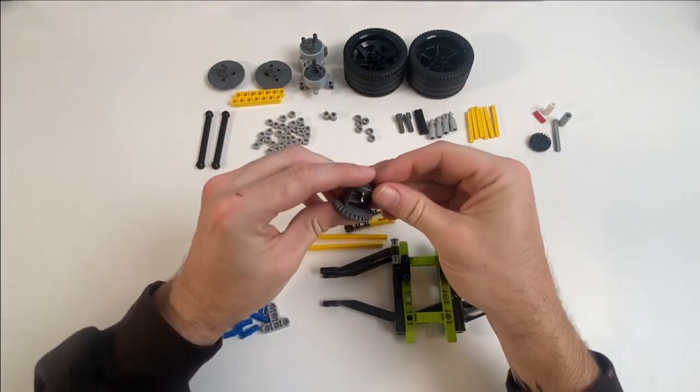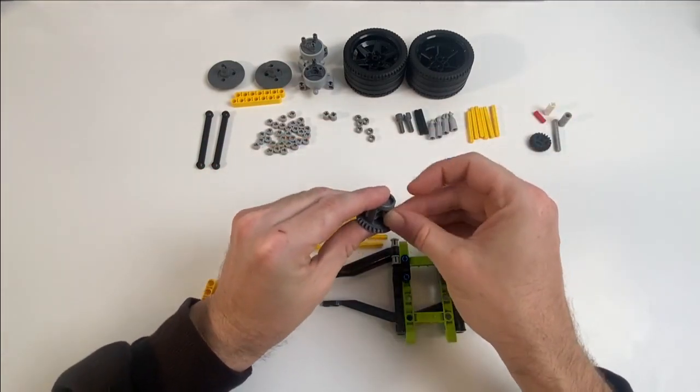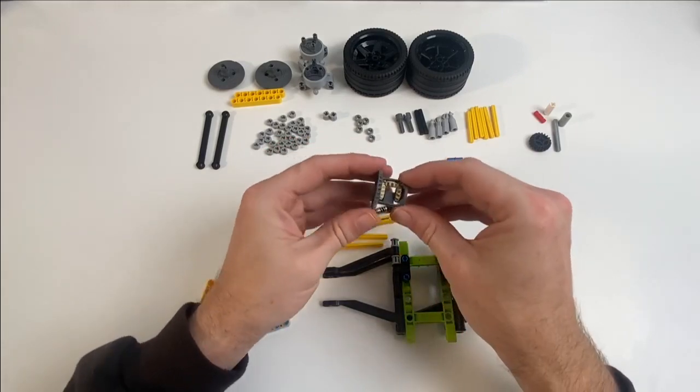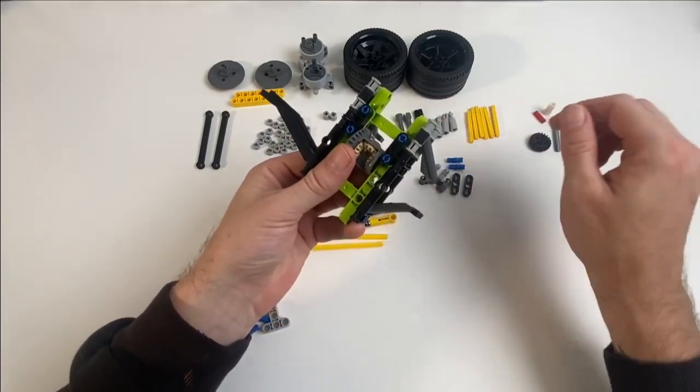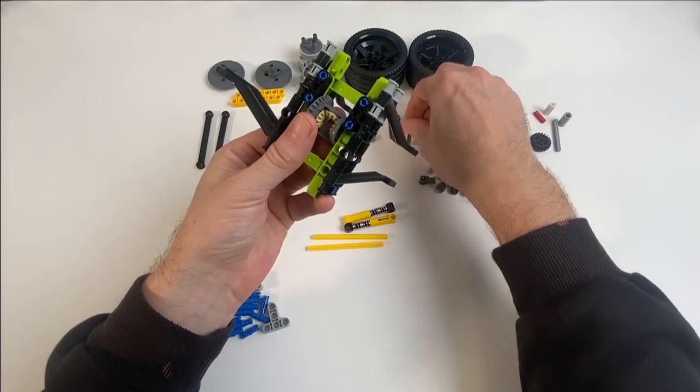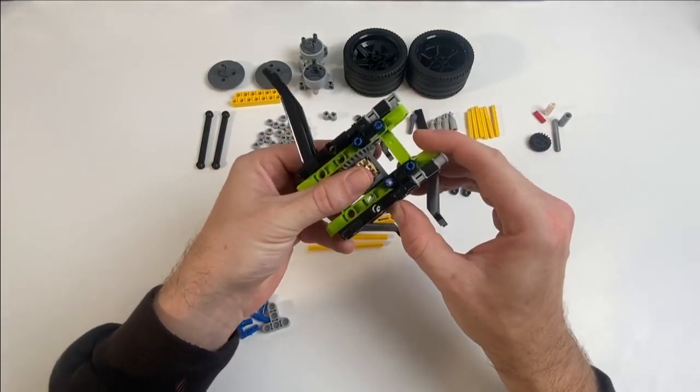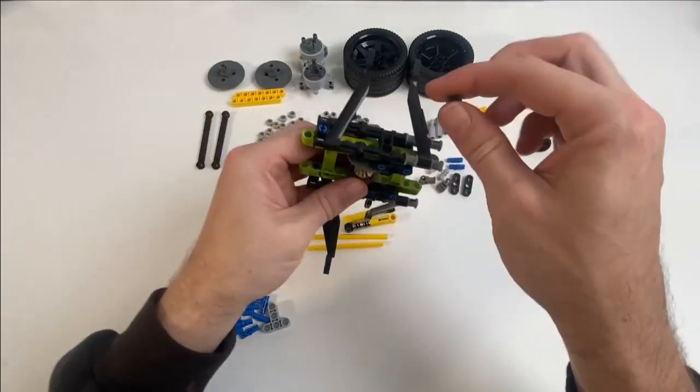This is the differential that I'm going to be using in this build, but you could easily swap this out for pretty much any of the other standard LEGO differentials that they make. If you were making this vehicle to be used on rough terrain or was going to be like a four-wheeler or something like that, then you might want to use one of the more heavy-duty differentials. But for the purpose of this build, this is completely fine.